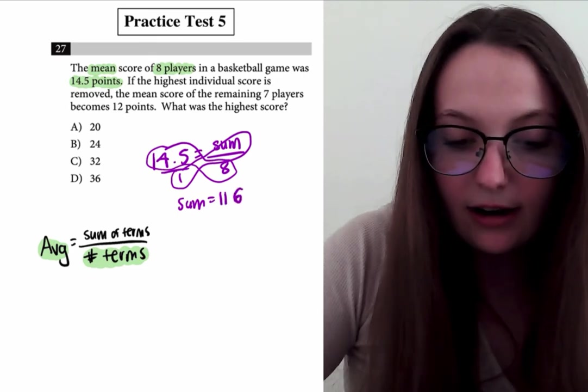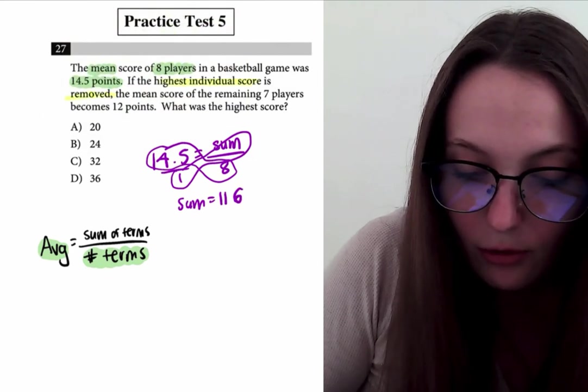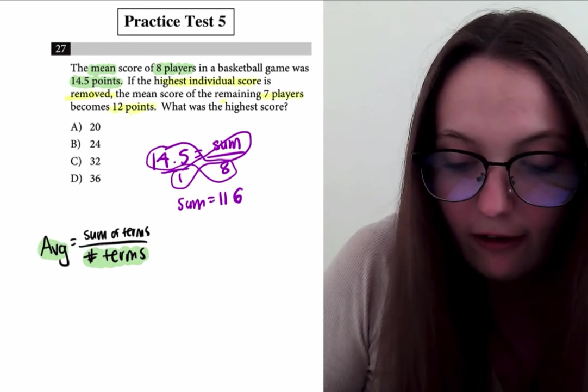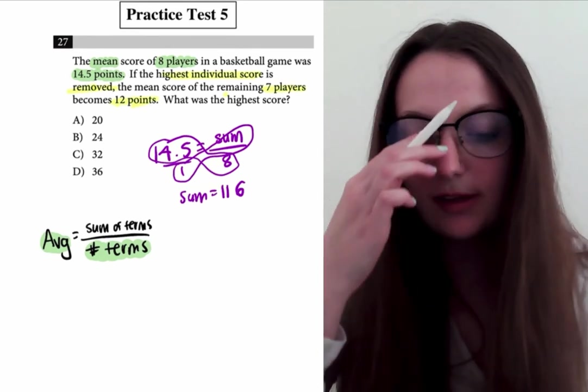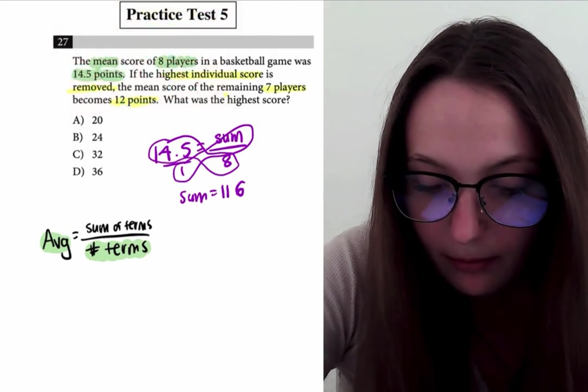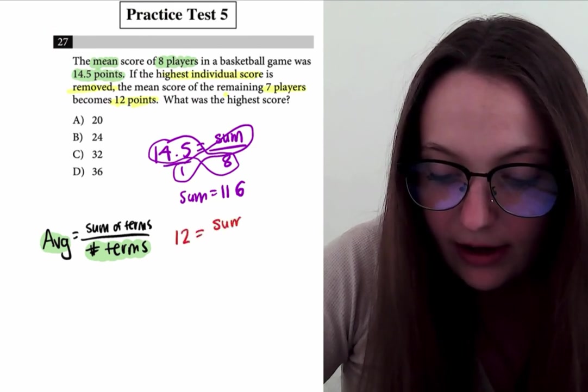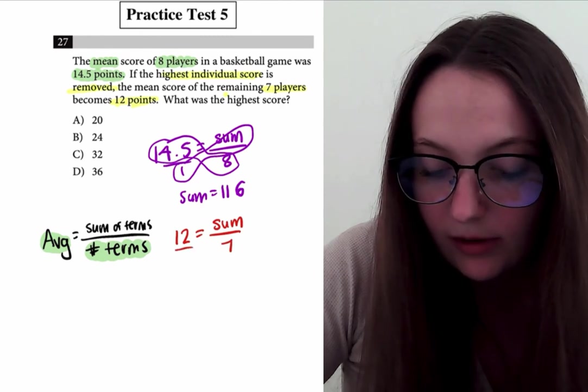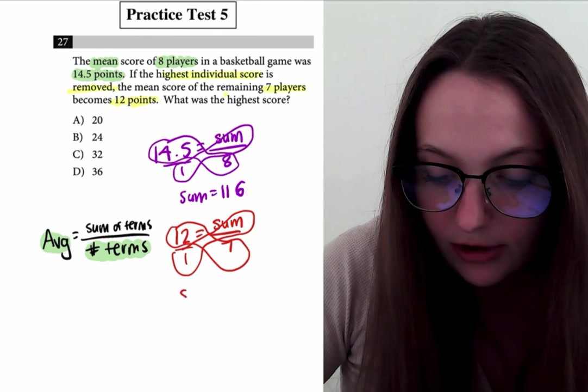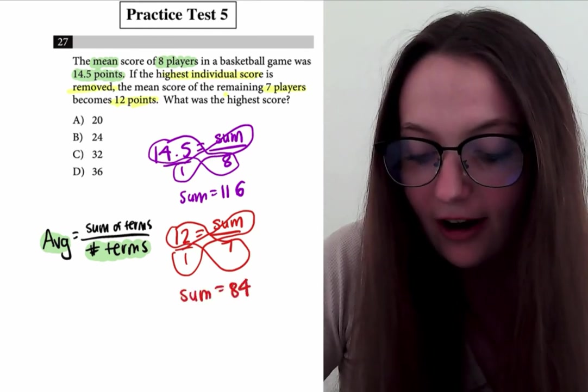Then they tell us that if the highest individual score is removed, the mean score of the remaining seven players becomes 12 points, and they ask what was the highest score. So we can set up another equation with those numbers. Now we know that the average would be 12, and we have seven players. So seven terms. Cross multiply: the sum equals 12 times seven, which is 84.